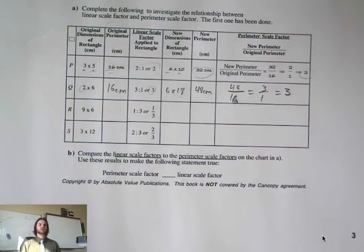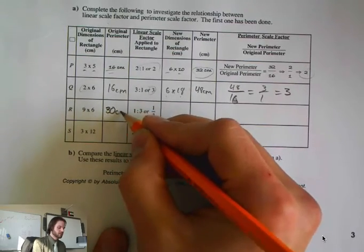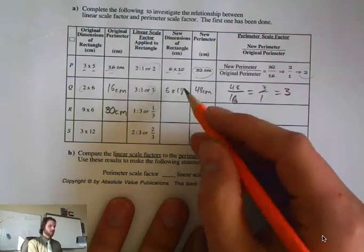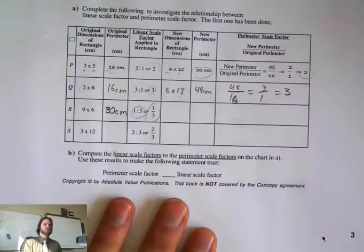Let's take a look at the next one. We're looking at 9 by 6, so 9 times 2 is 18, plus 6 times 2 which is 12, gives me a total of 30 centimeters. Now we're going to go by 1 third.